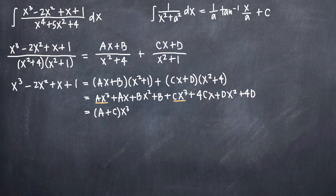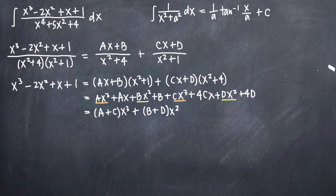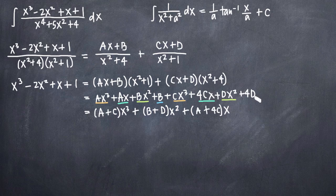When I multiply the quantity Cx plus D times the quantity x squared plus 4, I'll get Cx cubed plus 4Cx plus Dx squared plus 4D. Collecting like terms: Bx squared and Dx squared give the quantity B plus D times x squared; Ax and 4Cx give the quantity A plus 4C times x; and the constants B and 4D give the quantity B plus 4D.